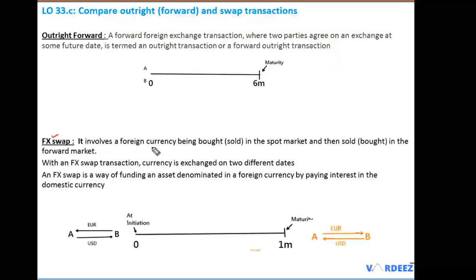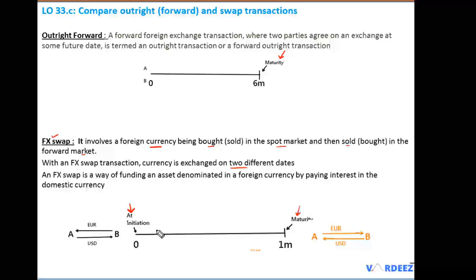Now if you consider the FX swap, it basically involves a foreign currency being bought in the spot market and then sold in the forward market. In a forex swap transaction, currency is exchanged on two different dates. In a simple outright forward, currency is exchanged only at maturity, but in an FX swap the currency is exchanged at initiation and then again at maturity.